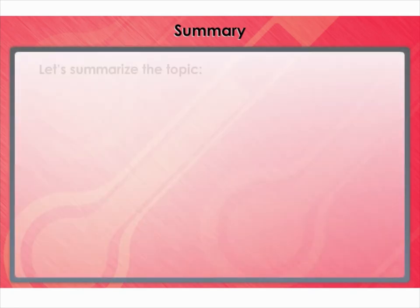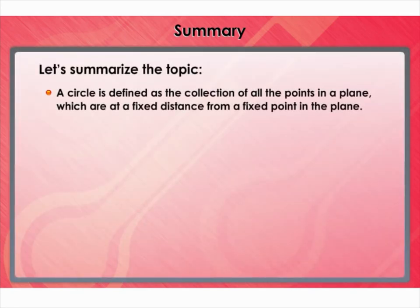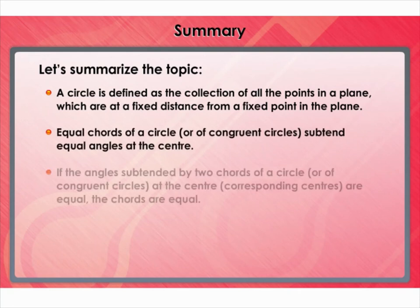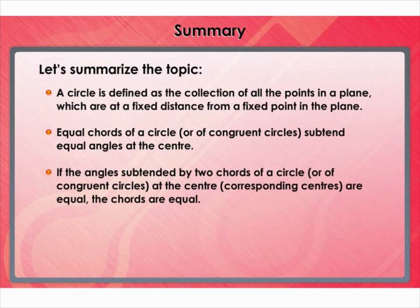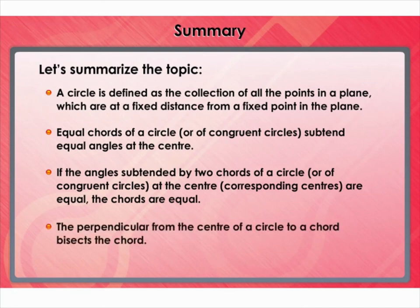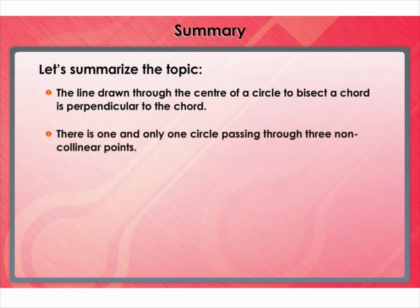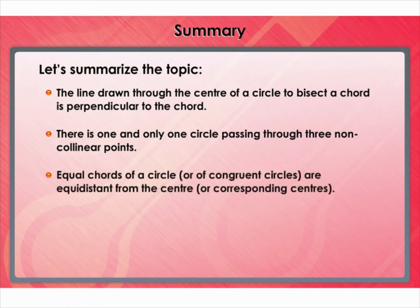Summary. A circle is defined as the collection of all the points in a plane which are at a fixed distance from a fixed point in the plane. Equal chords of a circle subtend equal angles at the center, and conversely, if the angles subtended by two chords at the center are equal, the chords are equal. The perpendicular from the center of a circle to a chord bisects the chord, and the line drawn through the center to bisect a chord is perpendicular to the chord. There is one and only one circle passing through three non-collinear points. Equal chords of a circle are equidistant from the center, and chords equidistant from the center are equal in length.